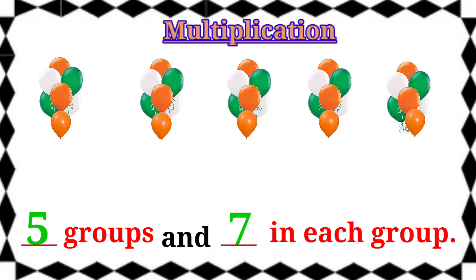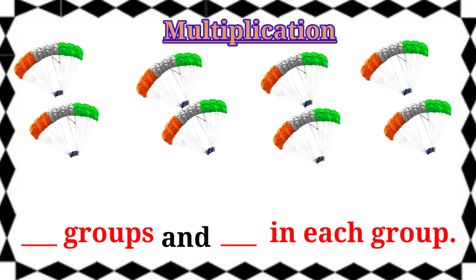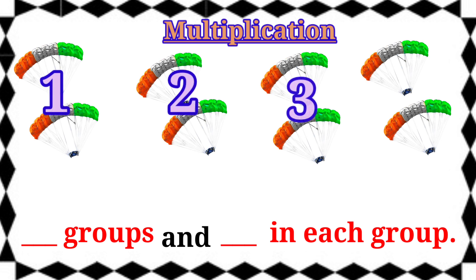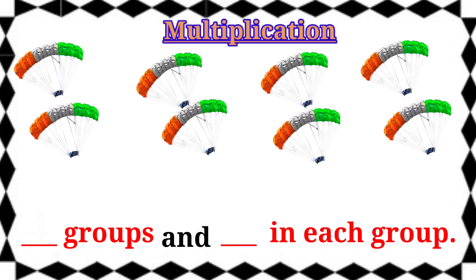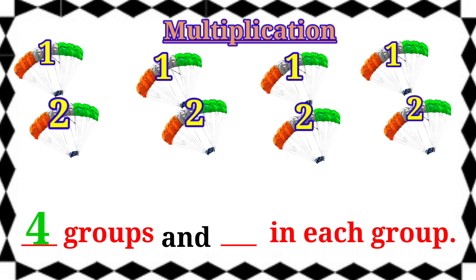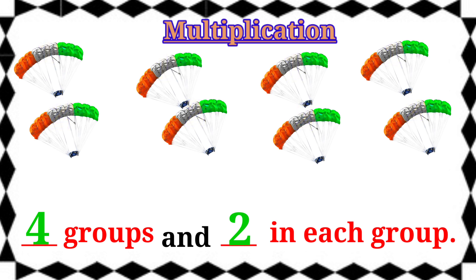Let's see the next example. Now we are going to count groups first. 1, 2, 3, 4. Here 4 groups. Let's write the number 4. Then count how many in each group. 1, 2. Here 2 in each group. Therefore, the answer is 4 groups and 2 in each group.